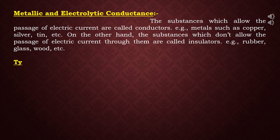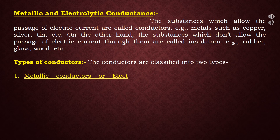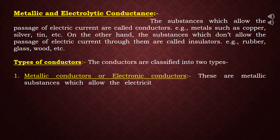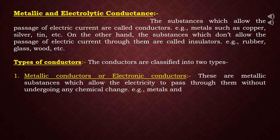Conductors are classified into two types. First are metallic conductors or electronic conductors — metallic substances which allow electricity to pass through them without undergoing any chemical change. For example, metals and their alloys, carbon black, graphite, etc. In these conductors, conduction of electricity is due to the movement of electrons, and there is no flow of matter.